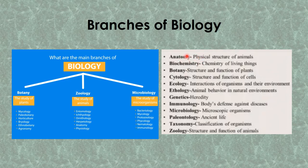Other branches of biology include anatomy, which is the physical structure of animals; biochemistry, which describes the chemistry of living things; botany, the study of the structure and function of plants; cytology, the structure and function of cells; and ecology, the interactions of organisms and the environment. There are many more branches beyond these.